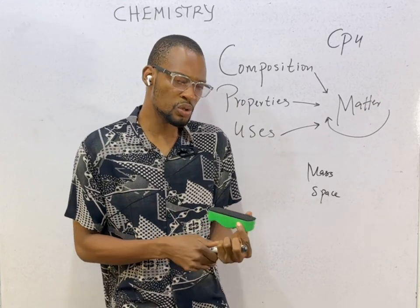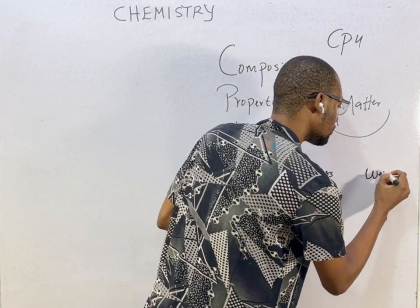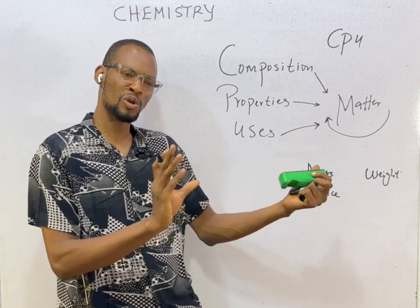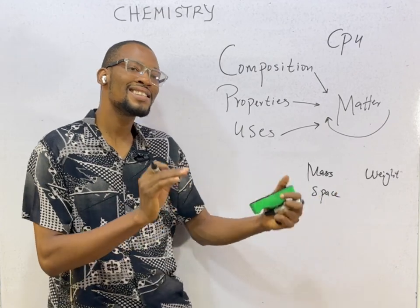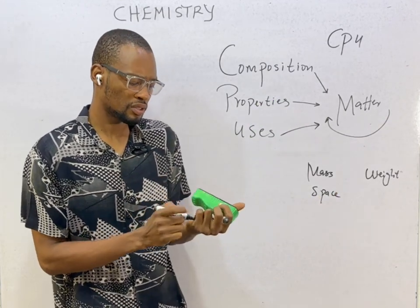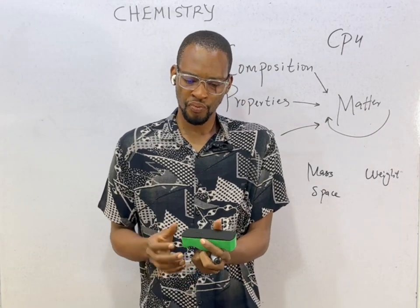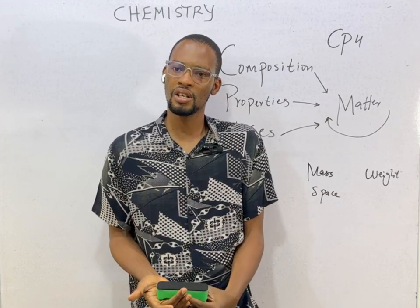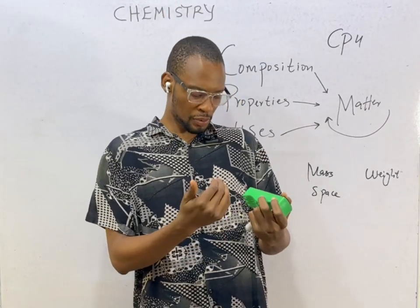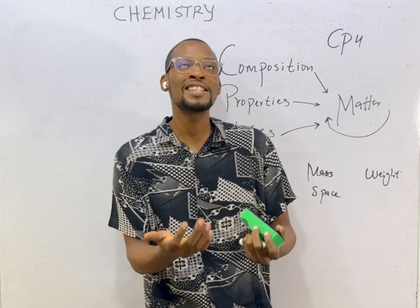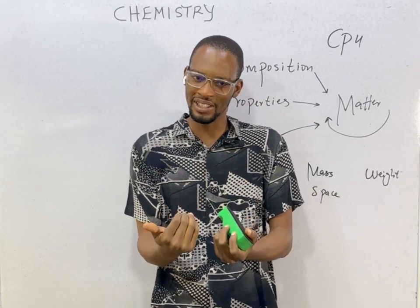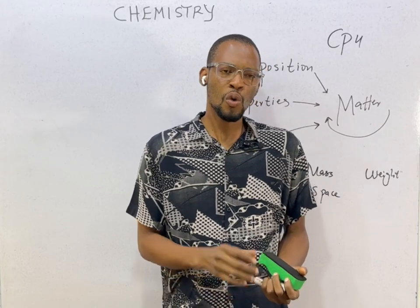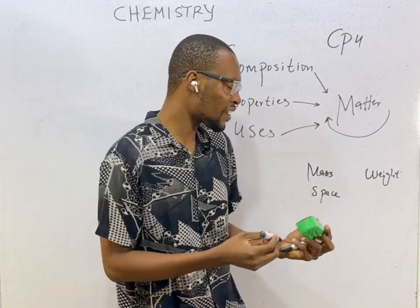One thing you should always remember: do not confuse mass and weight — they are different concepts entirely. Mass is the quantity of matter or substance in a body, while weight is the earth's pull on that body. Gravity is a force that brings all objects back to earth — anything that goes up will surely come down. That is the law of gravity.